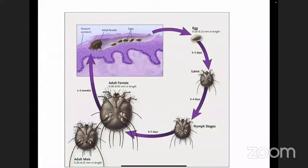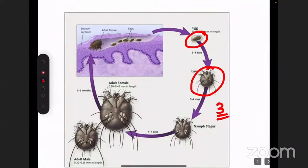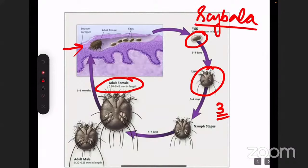Looking at the life cycle of a mite: starting from the egg stage, it becomes a larva, and the larva undergoes three nymph stages, after which it becomes the adult mite. The female mite is much bigger than the male mite and it is the fertilized female mite which burrows through the stratum corneum at that level, along with its eggs. There is also another term known as scybala — this is the fecal material of the adult female mite.